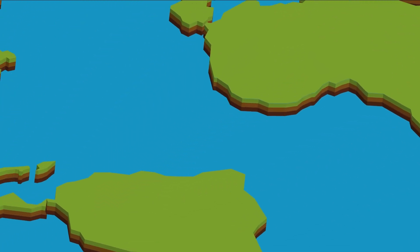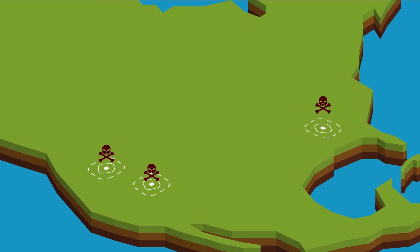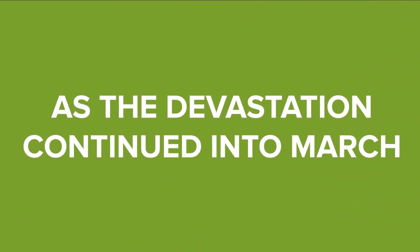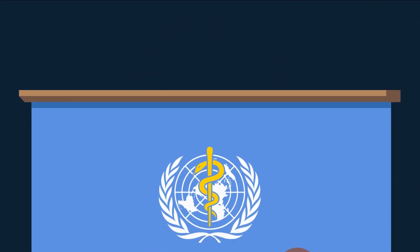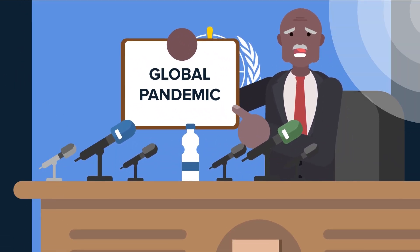The end of February also brought the first deaths on US soil as the devastation continued into March. Early March saw cases pop up on every continent across the globe, as well as a declaration of global pandemic from the World Health Organization.